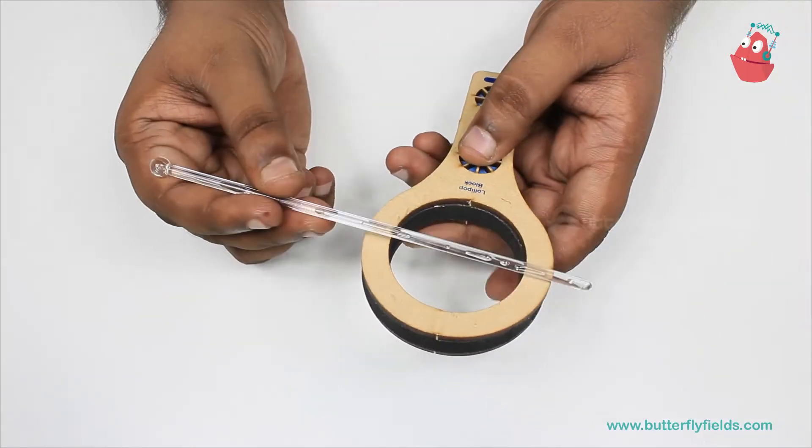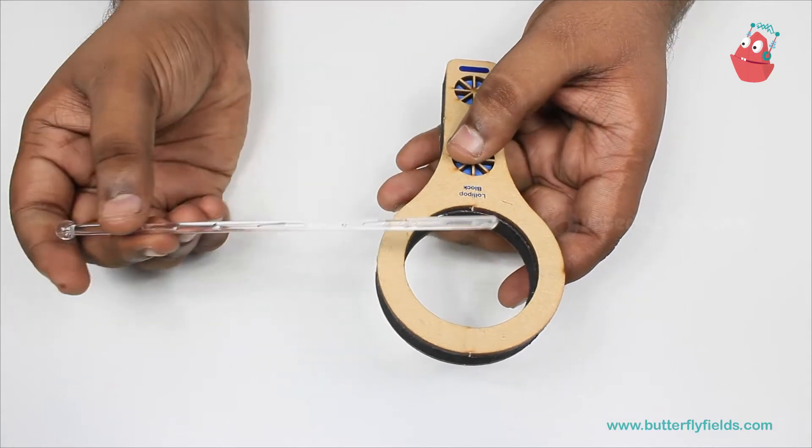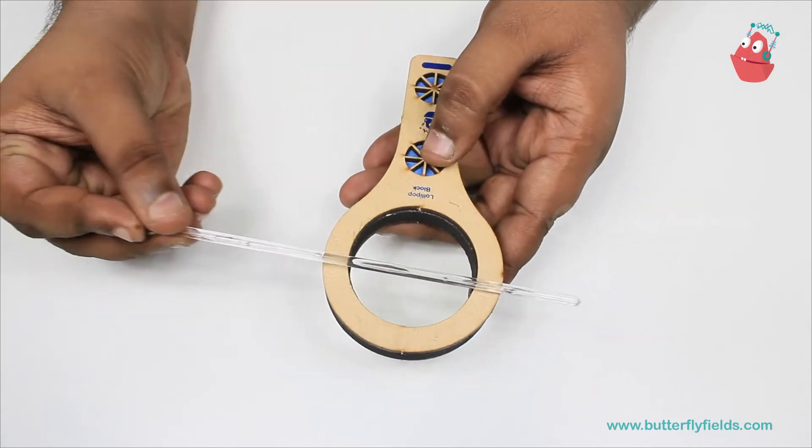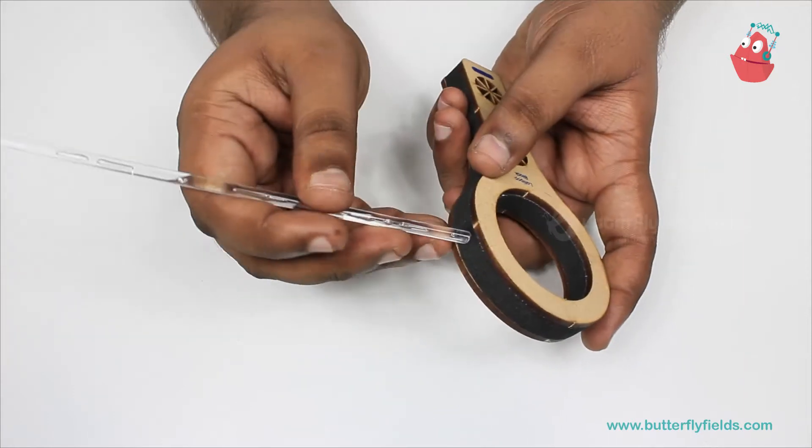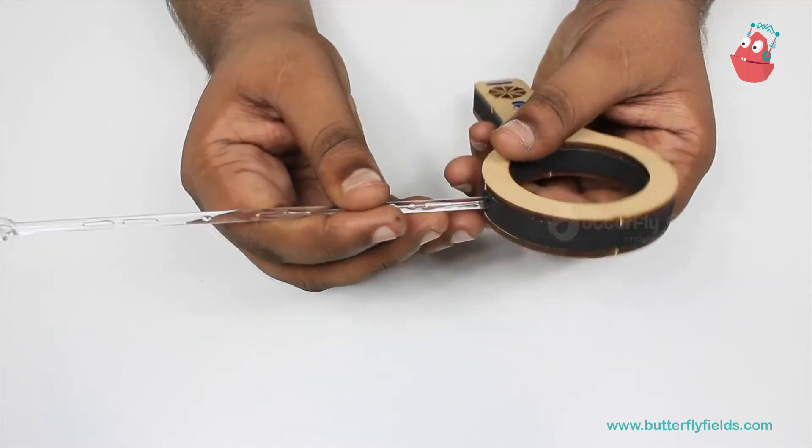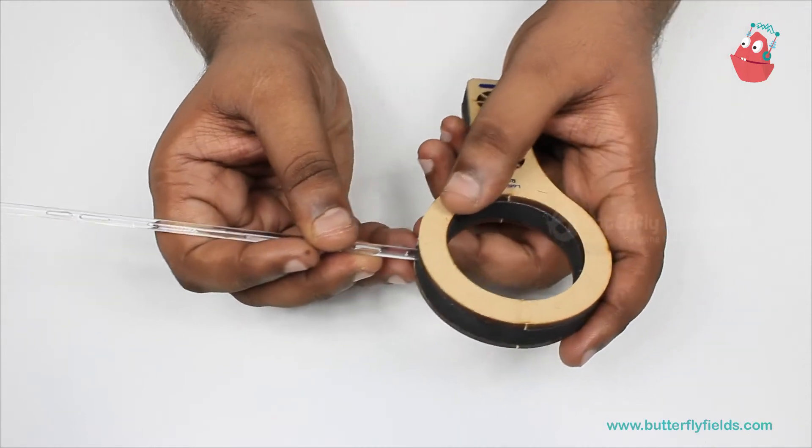The first one is to make a hole in this lollipop bit such that this plastic stick can go through it exactly at the center. For that, start piercing this plastic straw at the side. Be careful to not hurt your hands.